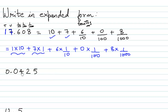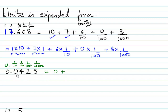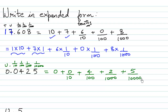So let us see how to expand the second number: 0.0425. This is the units place, then we have the decimal point, and then 1 upon 10, 1 upon 100, 1 upon 1000, and 1 upon 10,000. So we can rewrite this as 0 plus 0 upon 10, then 4 upon 100, then 2 upon 1000, and then 5 upon 10,000.